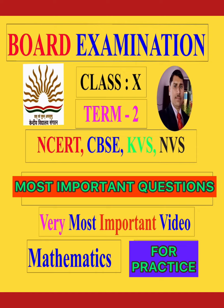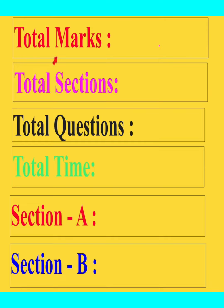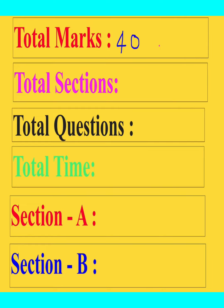Here is a practice test — a sample paper for your preparation for the board examination. You can see here the question paper you will get in the board examination. The total marks of the question paper will be 40 marks. There are three sections in the question paper — Section A, Section B, and Section C — and the total number of questions in this question paper is 14. You will get two hours to solve these 14 questions.